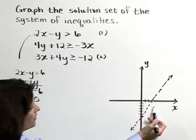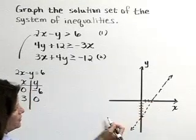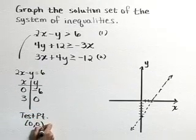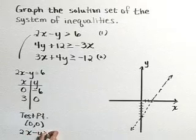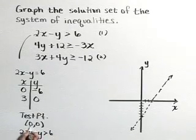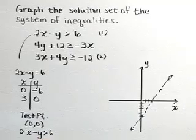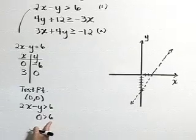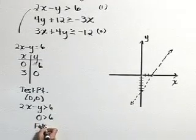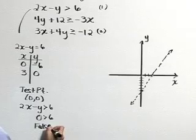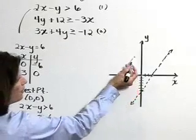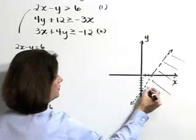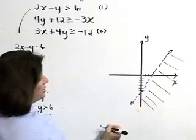Now let's decide which side of that line to shade. I'm going to choose the origin as a test point, so let's test the point (0, 0) in the original inequality: 2x minus y is greater than 6. Substituting 0 for x and 0 for y, we get 0 on the left-hand side. Is 0 greater than 6? No, it definitely is not — that is a false statement. Therefore, the origin is not part of the solution region, so the other side of this boundary line is the solution region for that inequality.